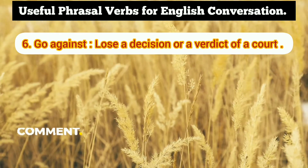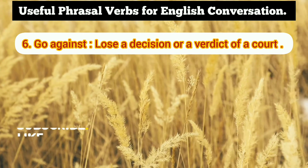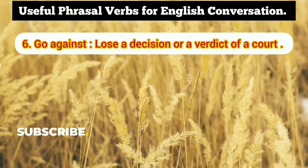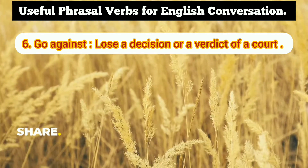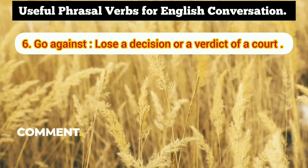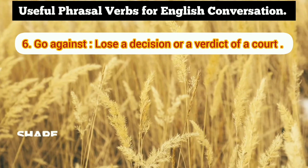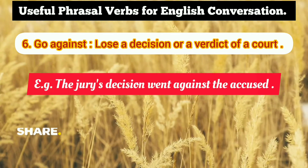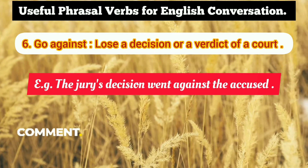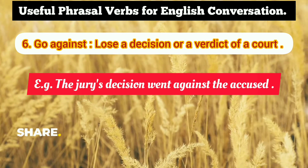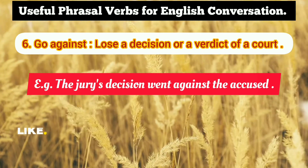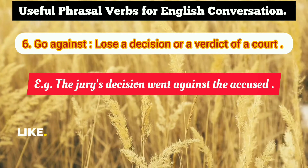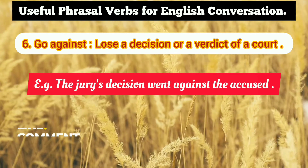The sixth phrasal verb is 'go against.' Go against means to lose a decision or verdict — when something doesn't go in your favor. Example: The judge's decision went against the accused, meaning the accused lost that particular case and the decision was not in his favor.